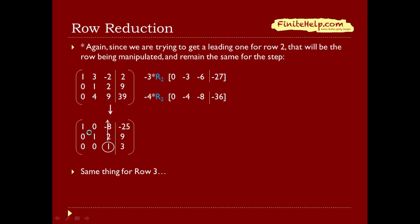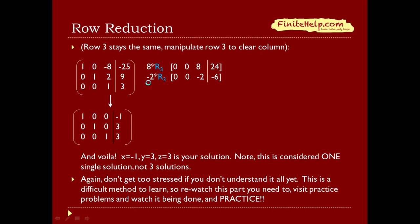We do the exact same thing for row 3 — getting a leading 1, which is already a 1. We clear the column with the same logic: multiplying 8 times row 3 for one row, and negative 2 times row 3 for another. Remember, row 3 is the row we're trying to get a leading 1 for, so that is the row we're multiplying and manipulating, and it is the row that stays the same. Then we add side by side to get the new rows.